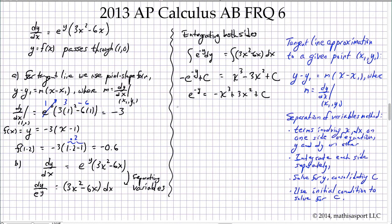Now I'm going to take the ln of both sides, where my goal is to get y by itself. So now I have -y = ln(-x³ + 3x² + c), still unspecified, and so finally I have y, which is what we're calling f(x), is -ln(-x³ + 3x² + c).